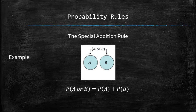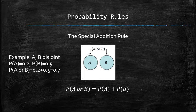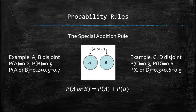For example, if A and B are disjoint and P(A) = 0.2 and P(B) = 0.5, then P(A ∪ B) = 0.2 + 0.5 = 0.7. Also, if C and D are disjoint and P(C) = 0.3 and P(D) = 0.6, then P(C ∪ D) = 0.3 + 0.6 = 0.9.